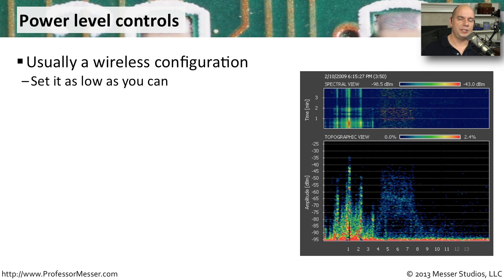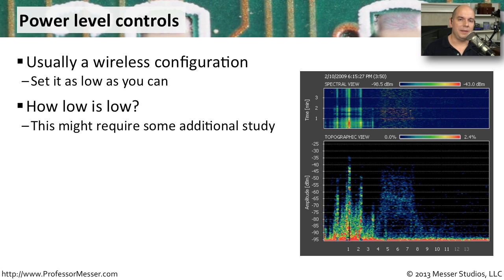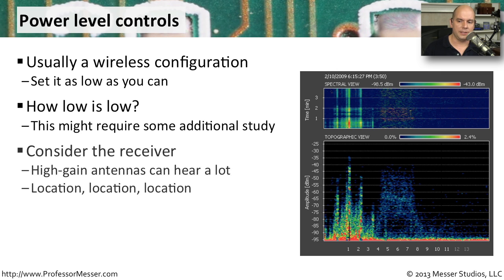On a wired network, you know exactly where your signal is going — it starts at one end of the cable and goes to the other. But on a wireless network, information is sent out into the air and can travel anywhere. That's why many access points allow you to adjust the transmit power to limit how far the signal goes — maybe restricting it from reaching the parking lot and instead limiting it to the size of your building. You may need to do some studies: set the power to a certain value, then move around and verify you can still communicate. Also think about the receivers in use, since some antennas can receive from very far distances.